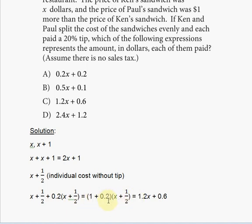And then you distribute that, and you're gonna have 1.2 times X plus 1.2 times one-half. And 1.2 times one-half is 1.2 divided by 2, which is 0.6. And you see this answer here—answer choice C.